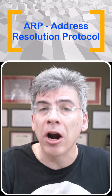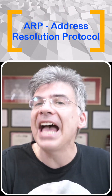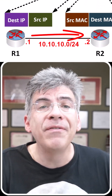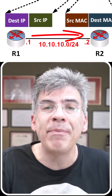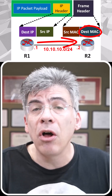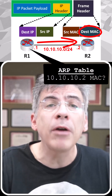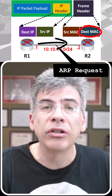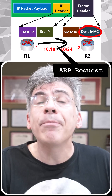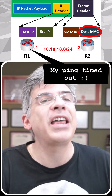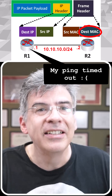It's all because of ARP, the Address Resolution Protocol. When you ping a destination IP, your device needs to know the MAC address of the next hop. If that MAC isn't already in the local ARP table, the router sends out an ARP request to learn it. And that process takes time, long enough for that first ping to time out.